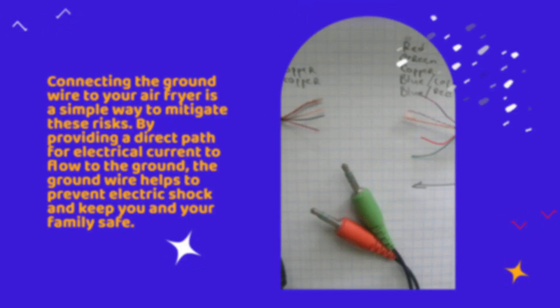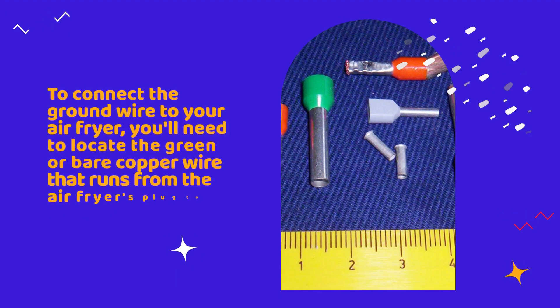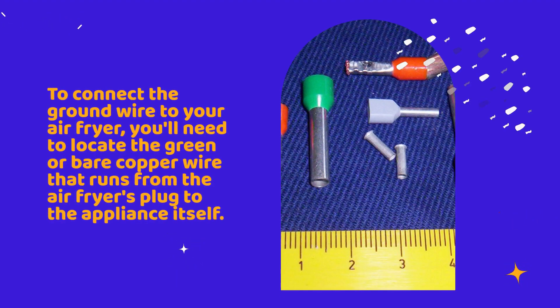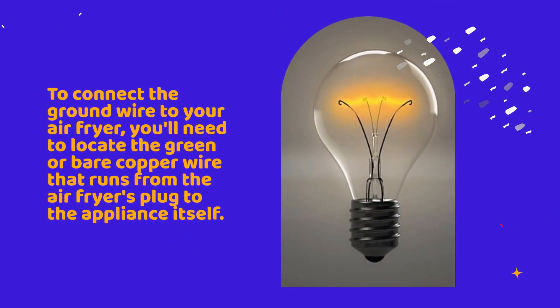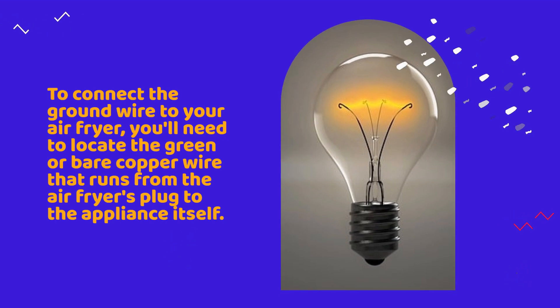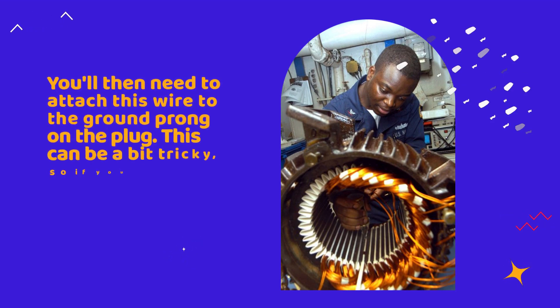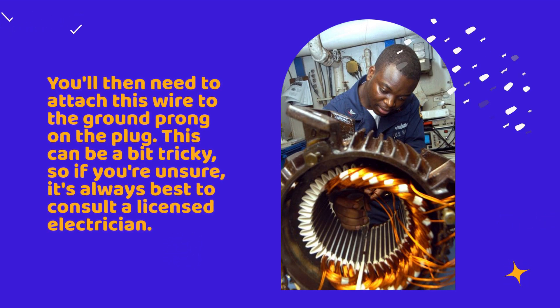To connect the ground wire to your air fryer, you'll need to locate the green or bare copper wire that runs from the air fryer's plug to the appliance itself. You'll then need to attach this wire to the ground prong on the plug. This can be a bit tricky, so if you're unsure, it's always best to consult a licensed electrician.